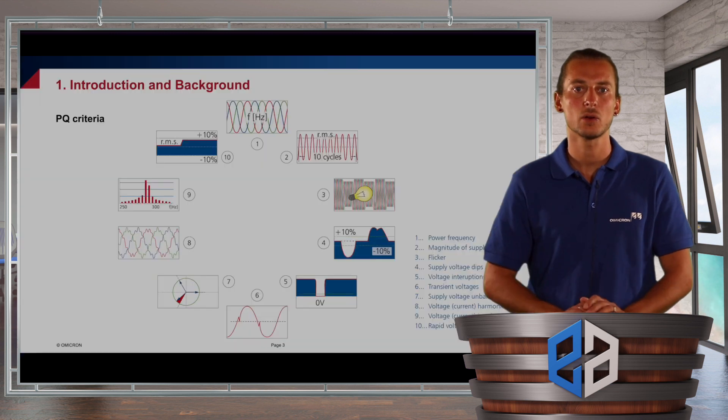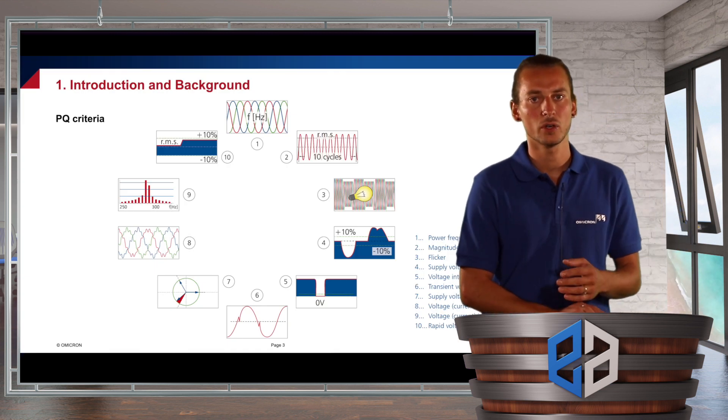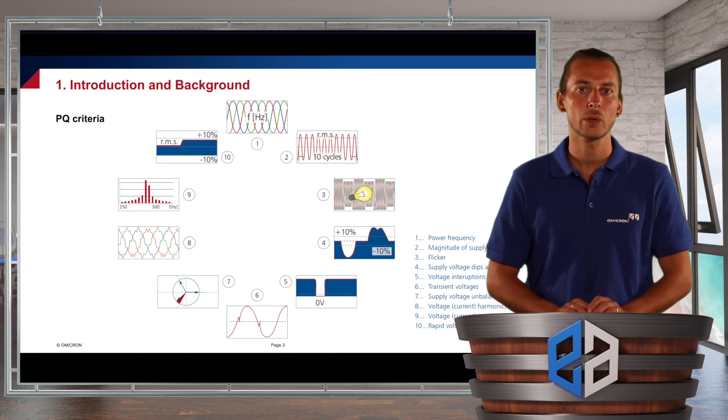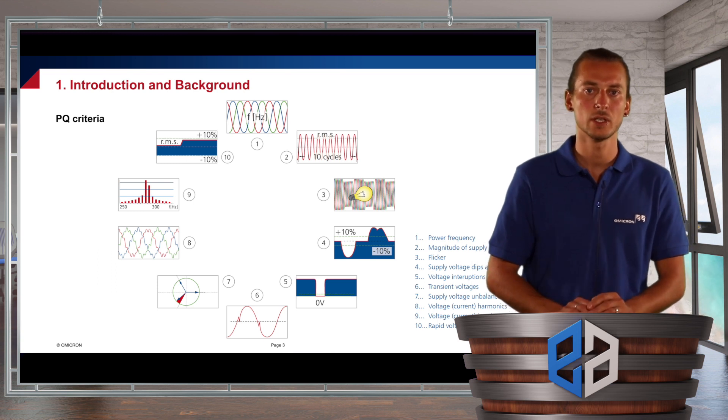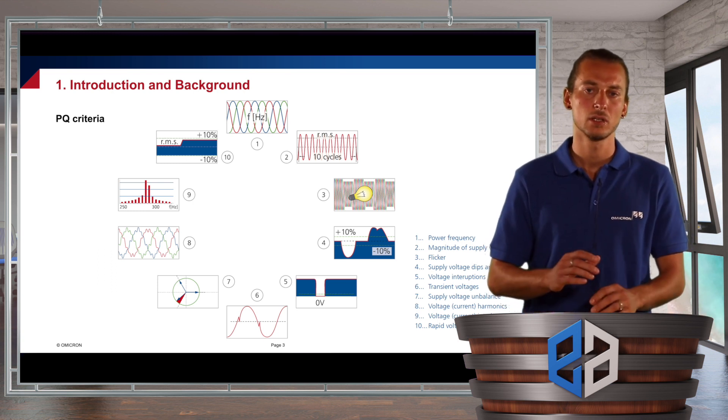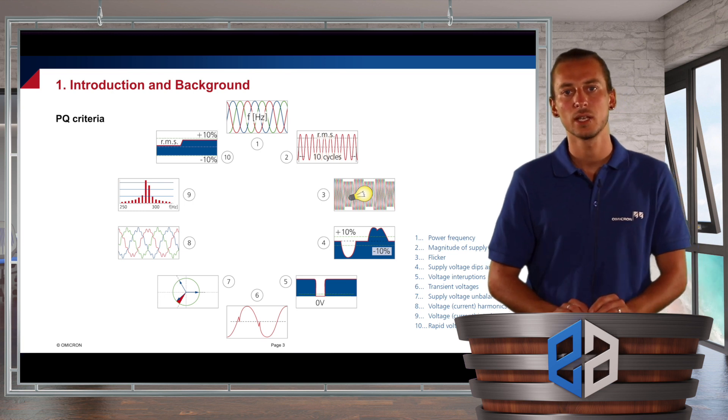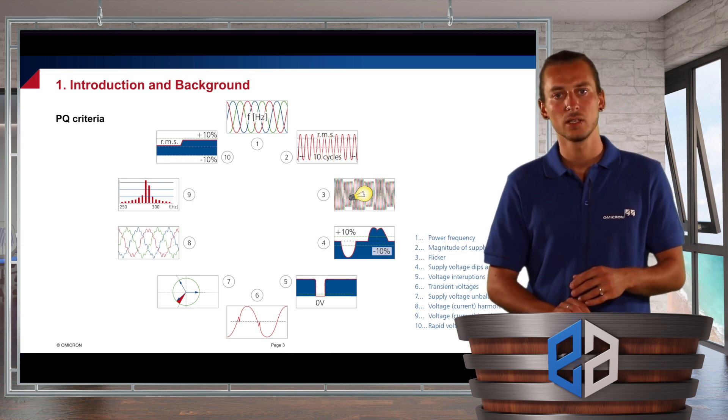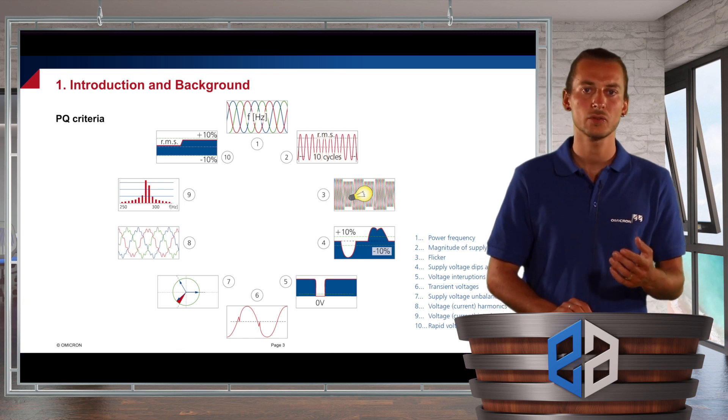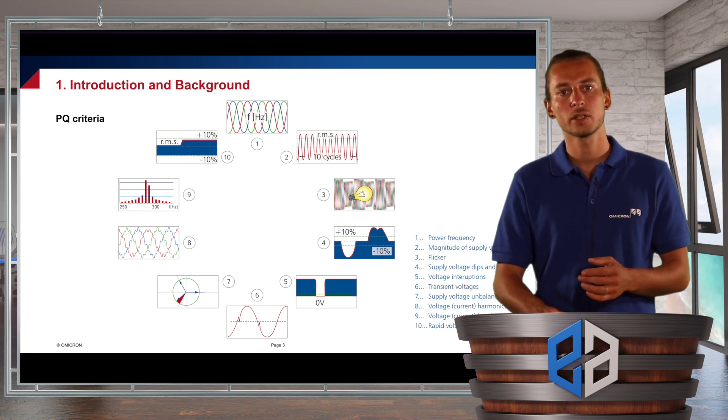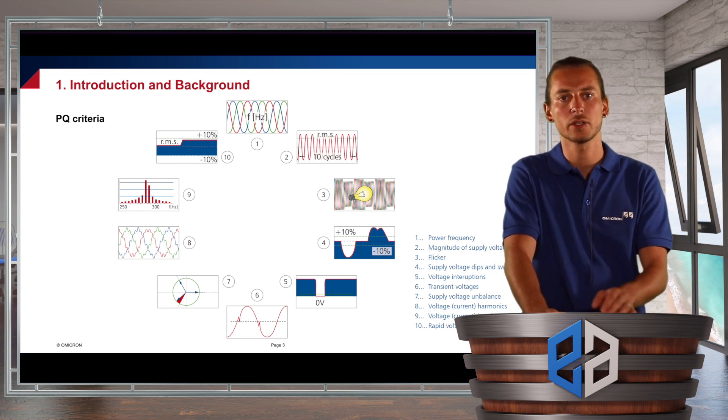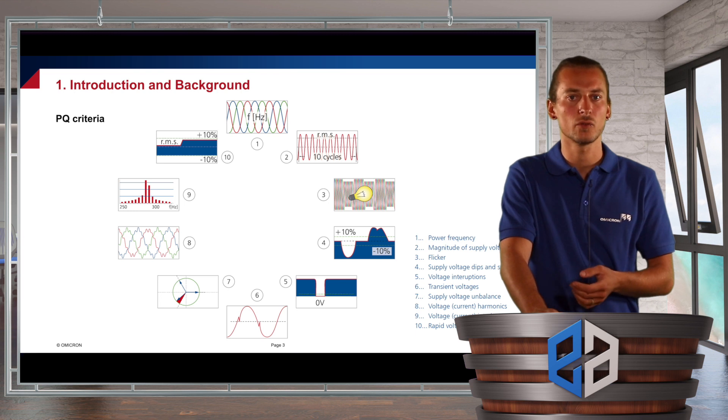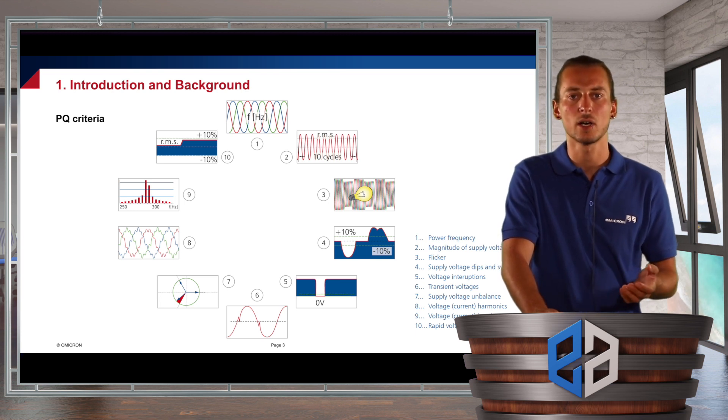Therefore, there are several power quality criteria defined. First of all there's the frequency. Then we have the magnitude of the voltage and current. We have flicker, which are short-term voltage fluctuations. Then we have long-term voltage fluctuations like dips or swells. And we even have interruptions. There are transient voltages and very fast rapid voltage changes. Then there's voltage or current unbalance. And of course, there are harmonics and interharmonics.